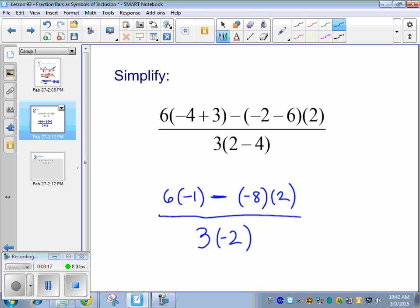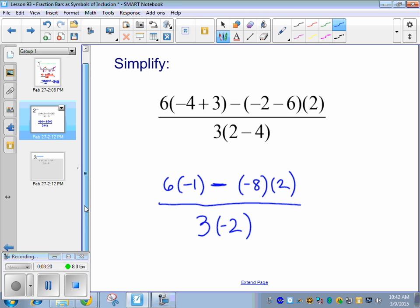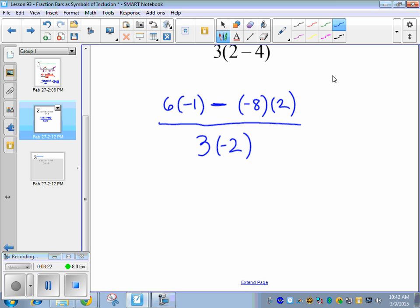All right, so Holly, what do I do next? We can go ahead and do all the multiplication on this set. We can do this times this, this times this, this times this. So Jaden, what's six times negative one? Negative six. Good. And then we have this negative sign that's still here. And then Jessica, what's negative eight times two? Good. And then in the denominator, Abby, what's three times negative two? Negative six. Good.